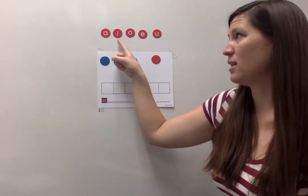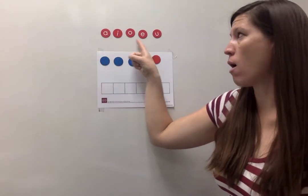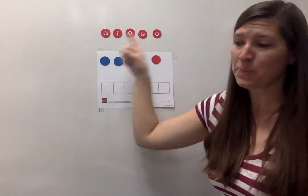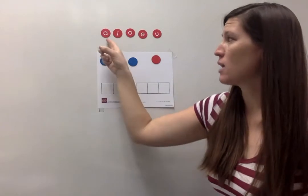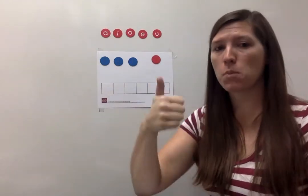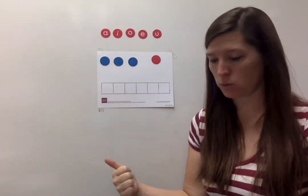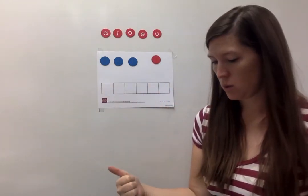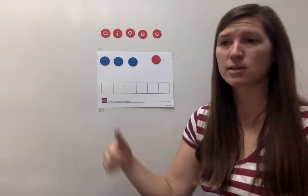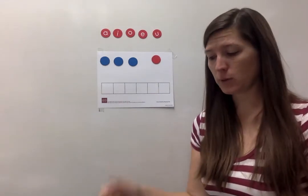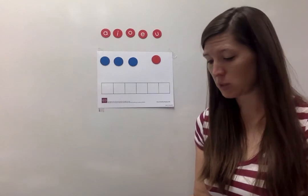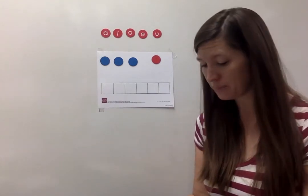So the short vowel sounds are: A, I, ah, E, uh. Vowels are special because they make two or more sounds, and every word in the English language has a vowel in it. So that's why it's important to learn the vowels — we use them in every single word that we say.